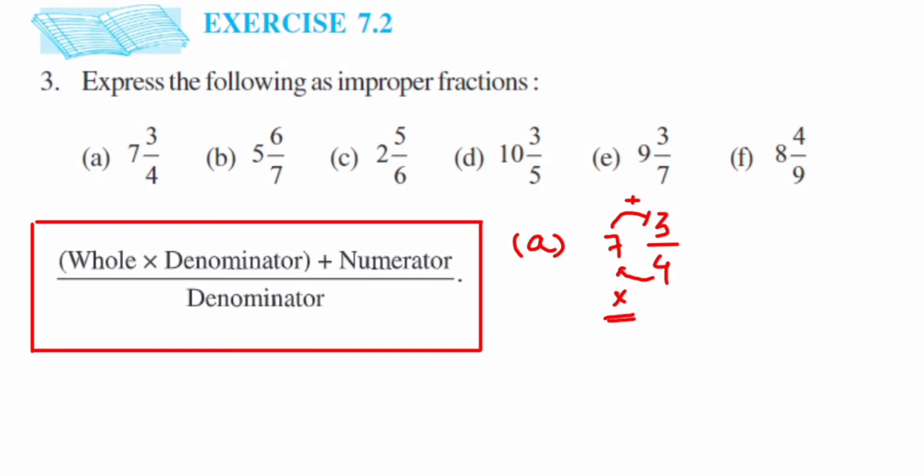Whatever answer you got, add with the numerator—that is what the formula given here is. So let's start doing this. This is 7 3/4. First multiply 7 into 4 or 4 into 7. Multiplication answer will be 28. Whatever answer you got, add with 3. So 28 plus 3 is going to give you 31. So this will be equal to 31/4. Your denominator will be the same—you don't have to do anything, denominator will remain the same.